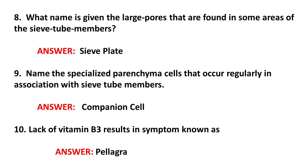9. Name the specialized parenchyma cells that occur regularly in association with sieve tube members. Answer: Companion cell.